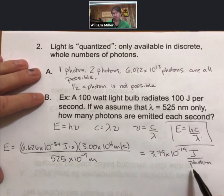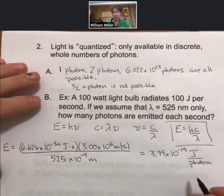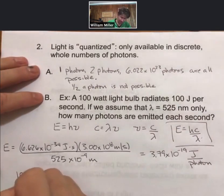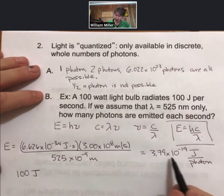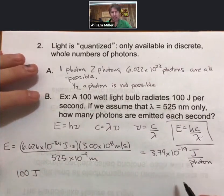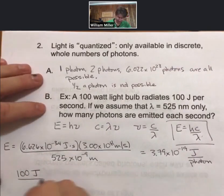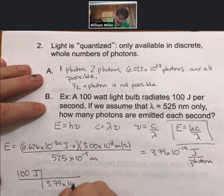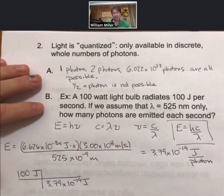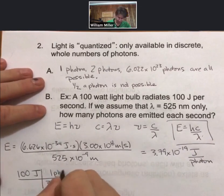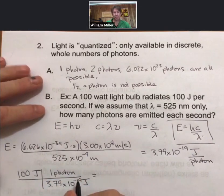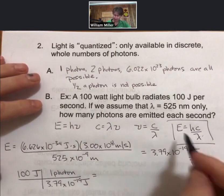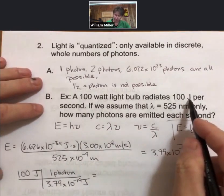And now this joules per photon, what we'd like to do is we'd like to use it as a unit conversion factor. Let me show you how that works. I have 100 joules, and I know that there are 3.79 times 10 to the minus 19 joules per photon. So if I put my joules with the number on the bottom, 3.79 times 10 to the minus 19 joules per one photon, I can calculate how many photons there are to deliver, or in each 100 joules.